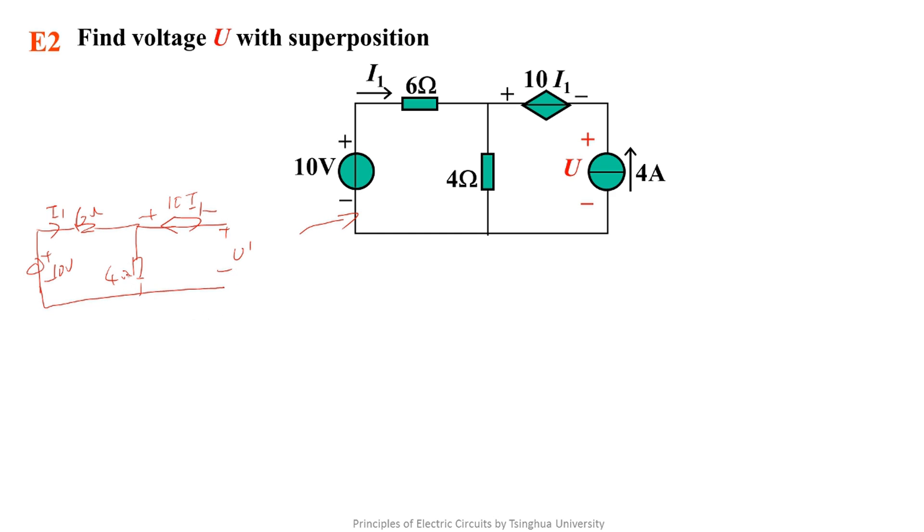Obviously, the voltage here is 4 volts. But U' isn't equal to 4 volts since there is a current controlled voltage source. We need to calculate the current. It's very simple. The current is 1 ampere. So it's 10 volts. U' equals minus 10 plus 4 equals minus 6 volts.